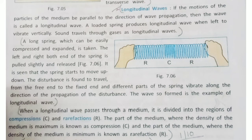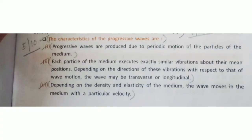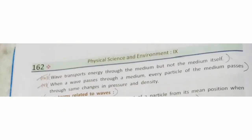The characteristics of progressive waves: they are produced due to periodic motion of the particles of the medium. Each particle executes exactly similar vibrations about its mean position. Depending on the direction of vibration with respect to wave motion, the wave may be transverse or longitudinal. The waves move with a particular velocity depending on the density and elasticity of the medium. The wave transports energy through the medium but not the medium itself. Every particle passes through the same changes in pressure and density.